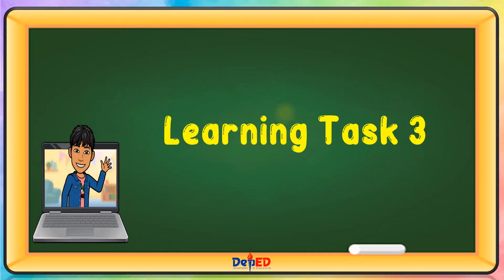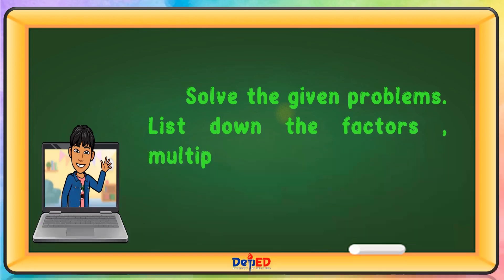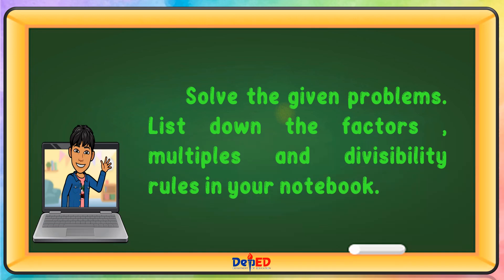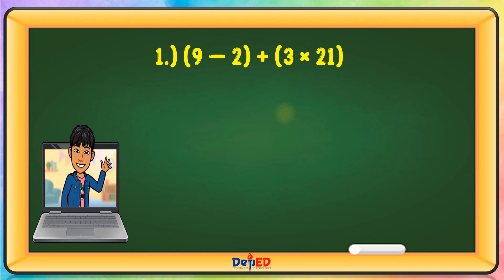Learning Task 3: Solve the given problems. Problem: 9 − 2 + (3 × 21). Let us first solve the parentheses with multiplication: 3 × 21 = 63. Then 9 − 2 = 7. Then 7 + 63 = 70. Our answer is 70.